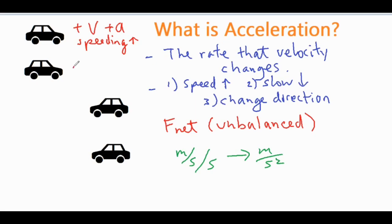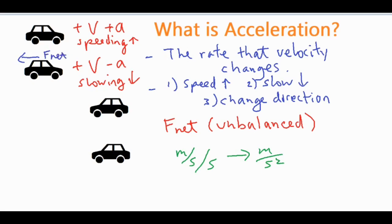If you have a positive velocity and a negative acceleration, that means you're going to be slowing down. The net force is directed opposite to the direction the car is moving. For example, if you slam on the brakes, the majority of the force goes back in the opposite direction, causing the object to slow down — whereas in the first case, the net force works with the velocity, causing it to speed up.